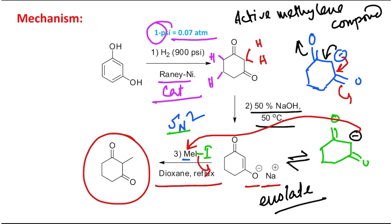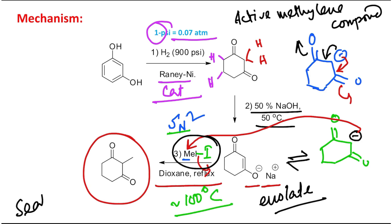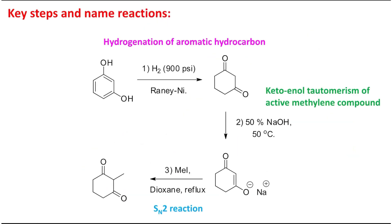The alkylation reaction is carried out in dioxane under refluxing conditions. Remember, this reaction requires care because the boiling point of methyl iodide is very low - nearly 40°C - while the boiling point of dioxane is nearly 100°C. The reflux must be done in a sealed tube or high-pressure tube so that the methyl iodide does not escape. Methyl iodide is also extremely carcinogenic, so precautions are essential.